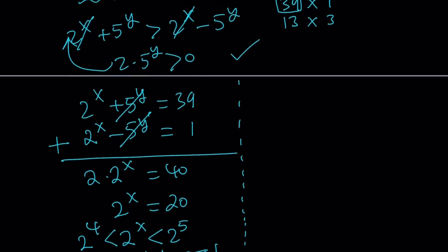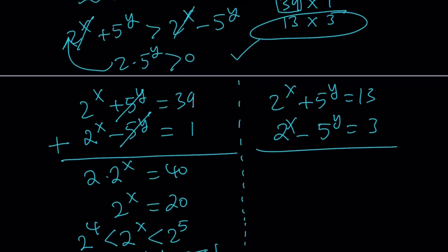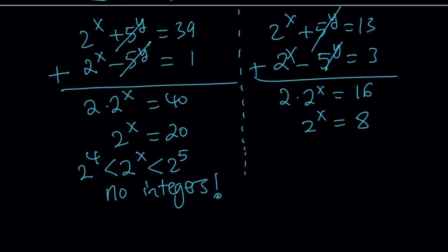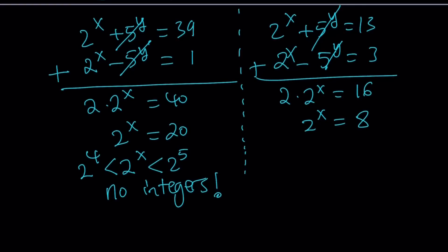Second case told us the first factor can be 13, and the second factor can be 3. We can go ahead and solve this. 5 to the y cancels out again. Just exact same thing happens. But 13 plus 3 is 16, which is nice, because 16 is a power of 2, and when you divide by 2, 8 is also a power of 2. So we get an integer solution. If you didn't get a solution from here, then this equation would have no integer solutions. x equals 3.